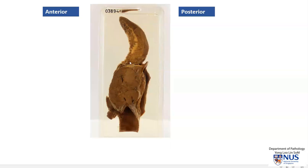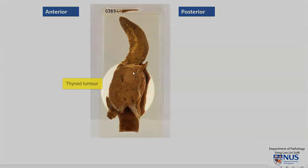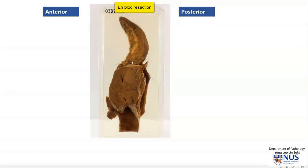Hello, here is a gross specimen of a tumour in the thyroid gland that is actually quite extensively invading into the surrounding structures, and we have an en bloc resection. So let's orientate ourselves. This is the anterior surface and this is the posterior surface.